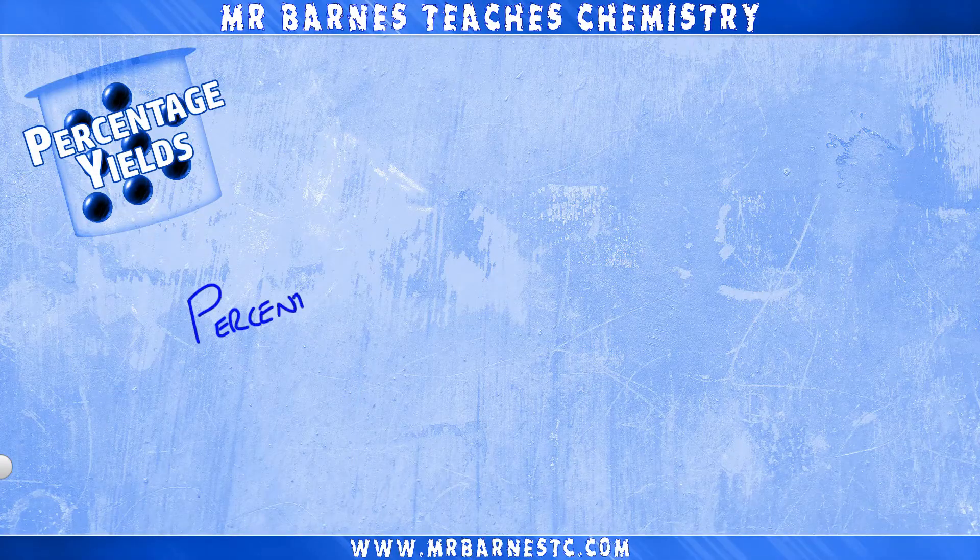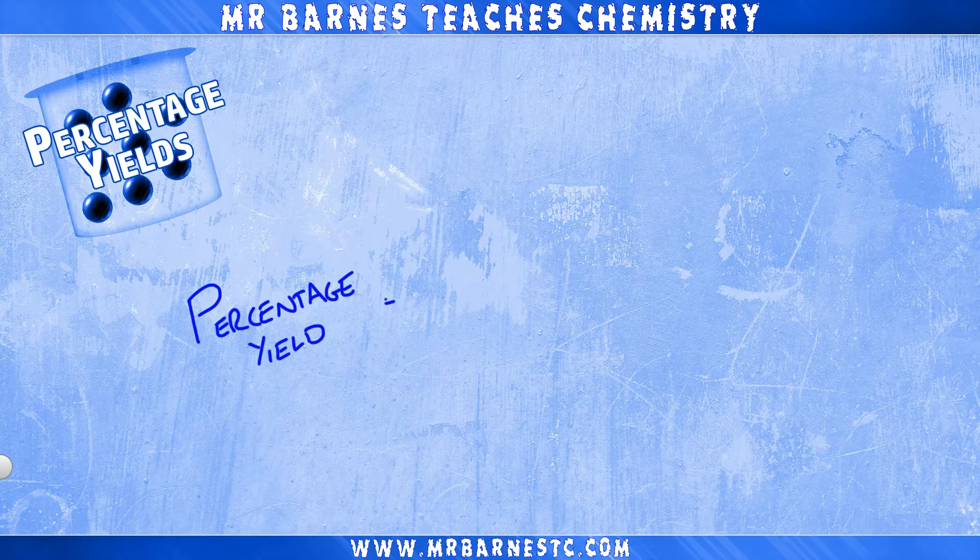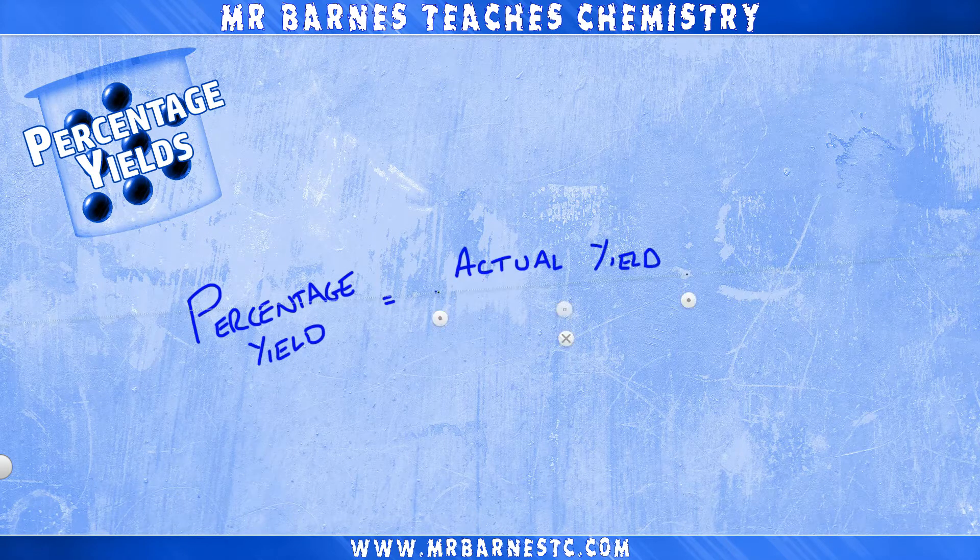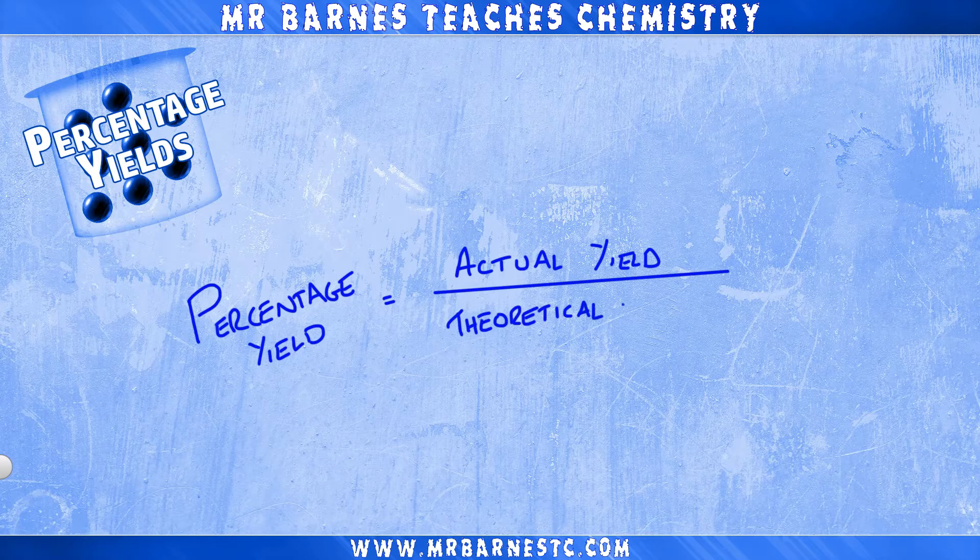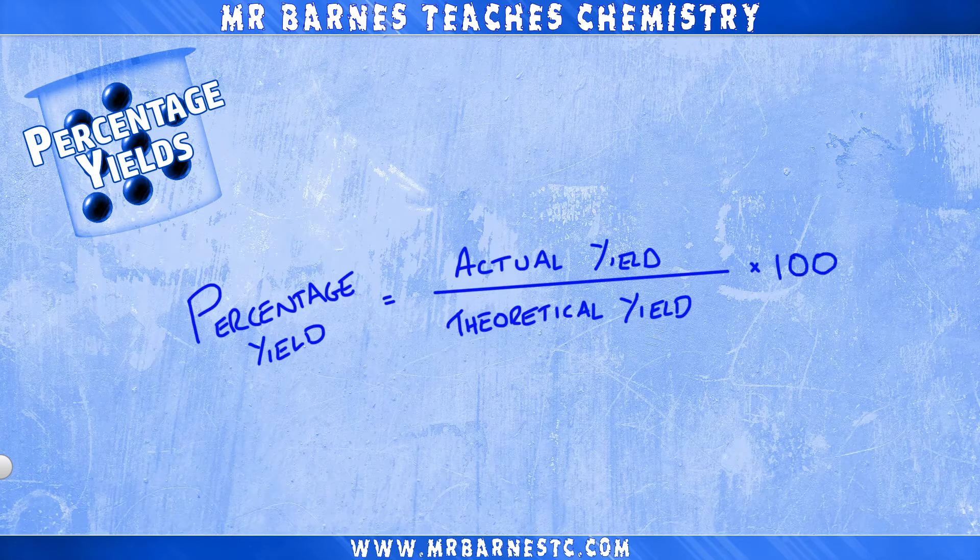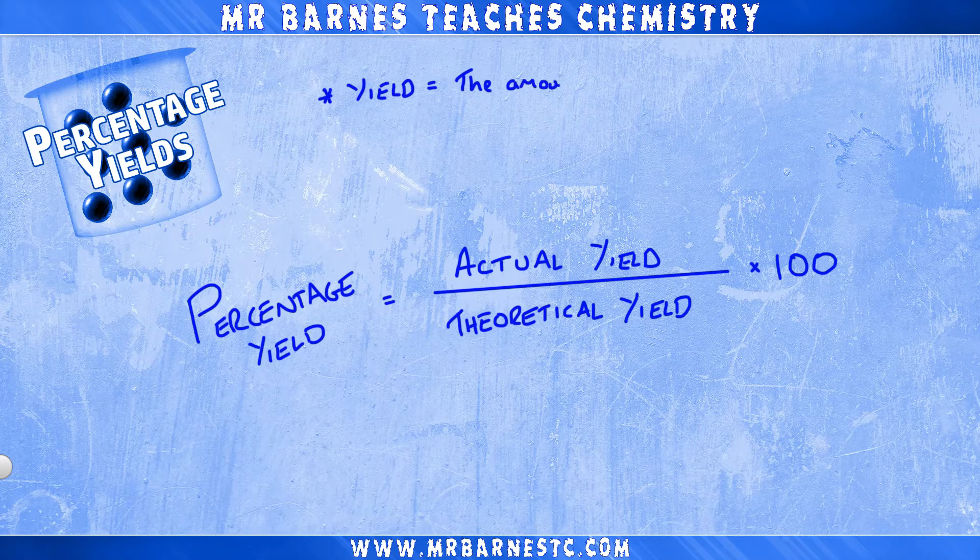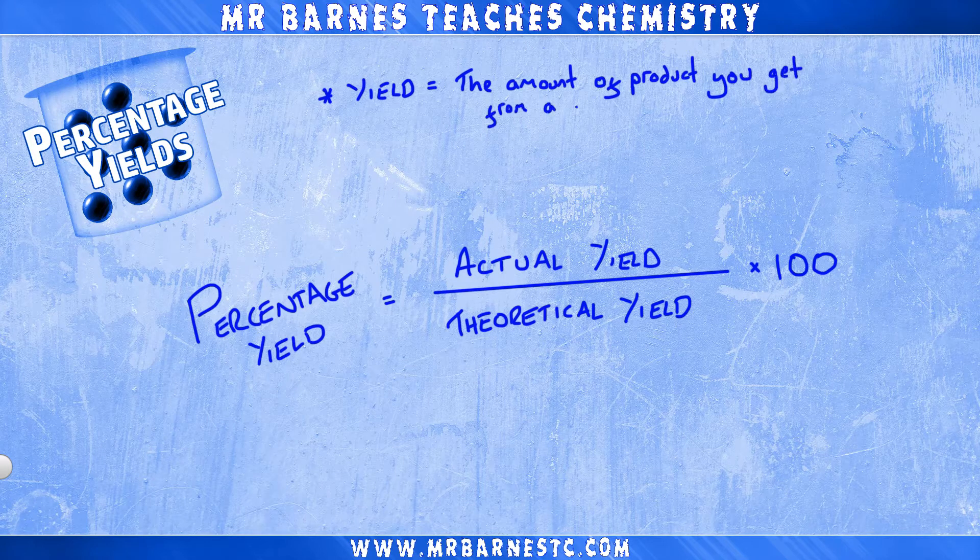To start off with then, you need to know the equation to calculate percentage yield, which is nice and simply divide the actual yield by the theoretical yield and then multiply it by 100. Now, when we talk about yields, we talk about the amount of product you get from a chemical reaction.